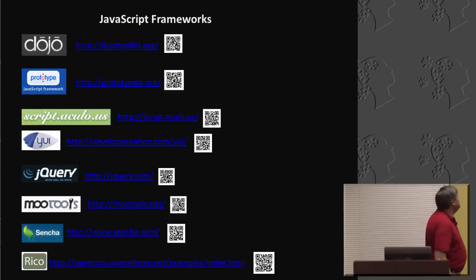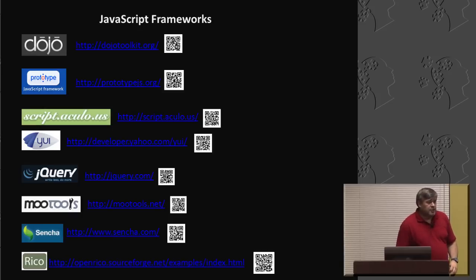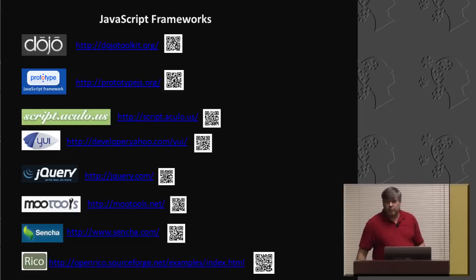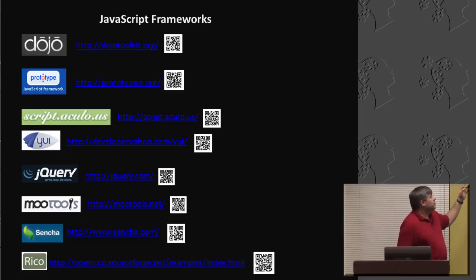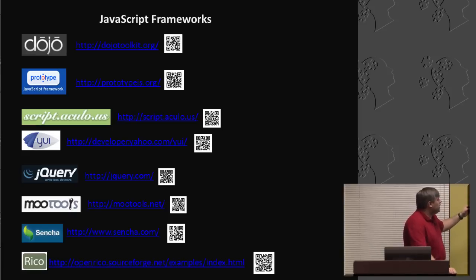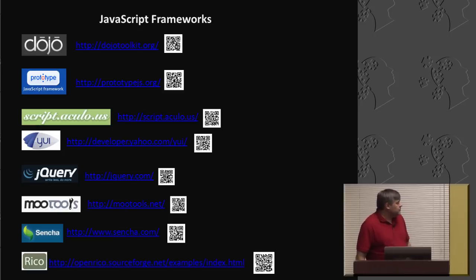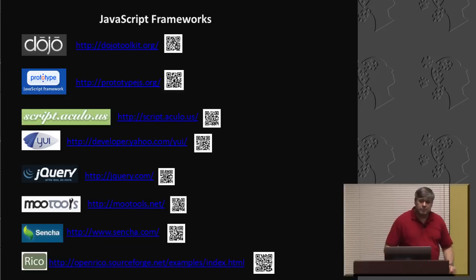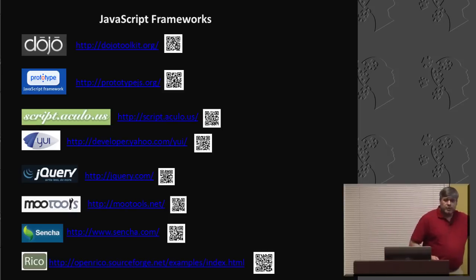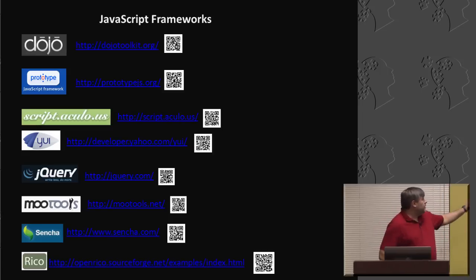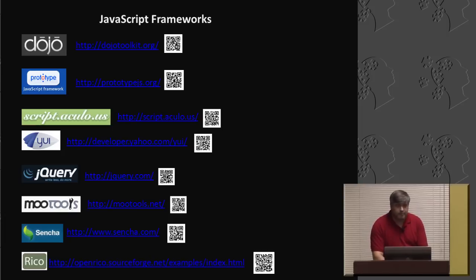These are some of my favorite JavaScript frameworks. Dojo is the main API used for a company called esri.com. If you want to tinker with it, you can tool around with this mapping application I'm going to show you — they use the Dojo API. I use Prototype, Scriptaculous for some of the interface. jQuery as well. MooTools not so much. Sencha — since it became more proprietary and split out from what it used to be, which was ExtJS. I use Ricoh for rounding corners on my application. I've put QR codes on the slide so you can scan them and check out the different frameworks.